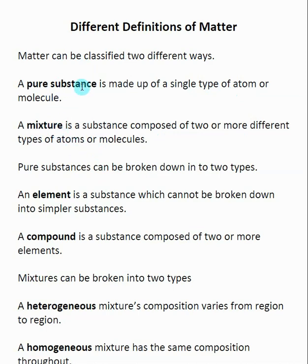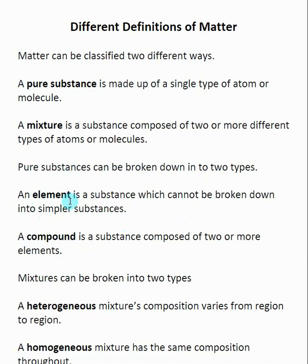Each of these is broken down into a further subset. A pure substance can be either an element or a compound. An element is a substance which cannot be broken down into simpler substances — just one individual element. A compound is a substance composed of two or more elements. The difference is whether there is one element or more than one element inside the pure substance.